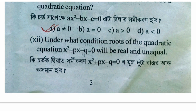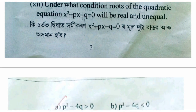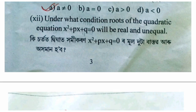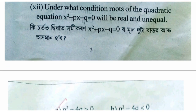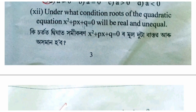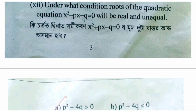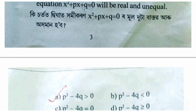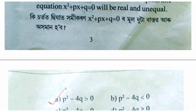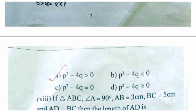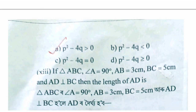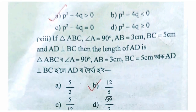Under what condition will the roots of the quadratic equation x squared plus bx plus c equal 0 be real and not equal? The condition is p squared minus 4q is greater than 0.